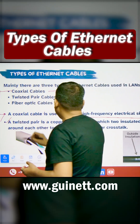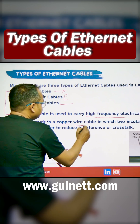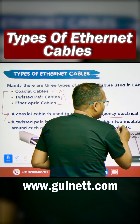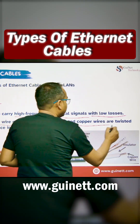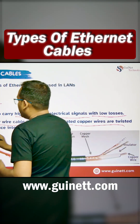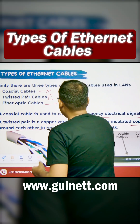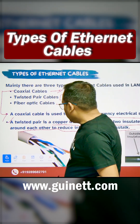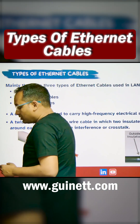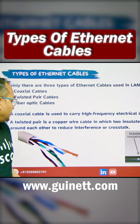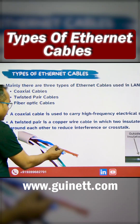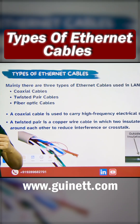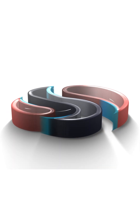We also have the twisted pair cable, which is a copper wire cable consisting of two insulated copper wires twisted around each other to reduce interference and crosstalk. The twisted pair cable gets its name from this twisted arrangement of the wires.